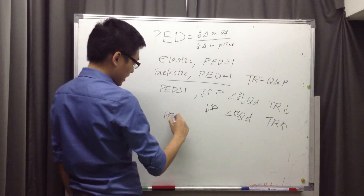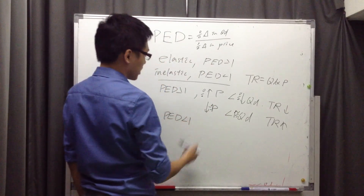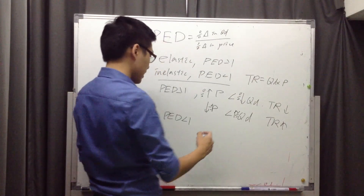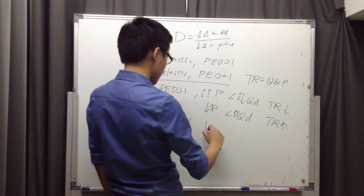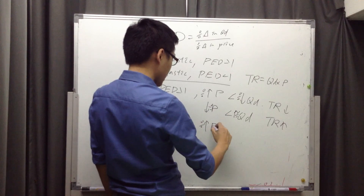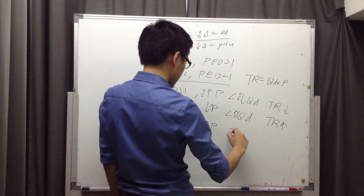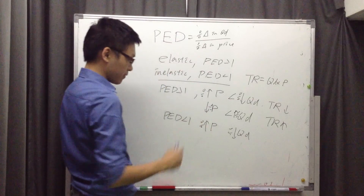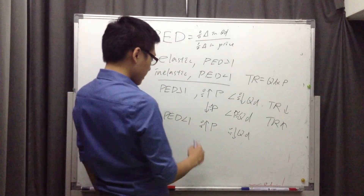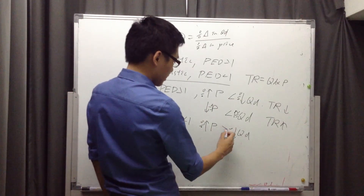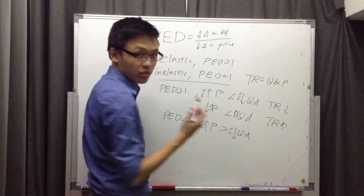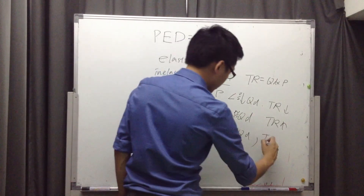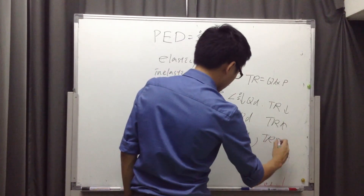For the second case, PED is less than 1 — this is the inelastic case. If you increase your price, there will be a drop in quantity demanded. Which change is greater? If it's inelastic, then the change in price is greater, so the percentage increase in price is greater than the percentage decrease in quantity demanded, meaning total revenue is going to increase.